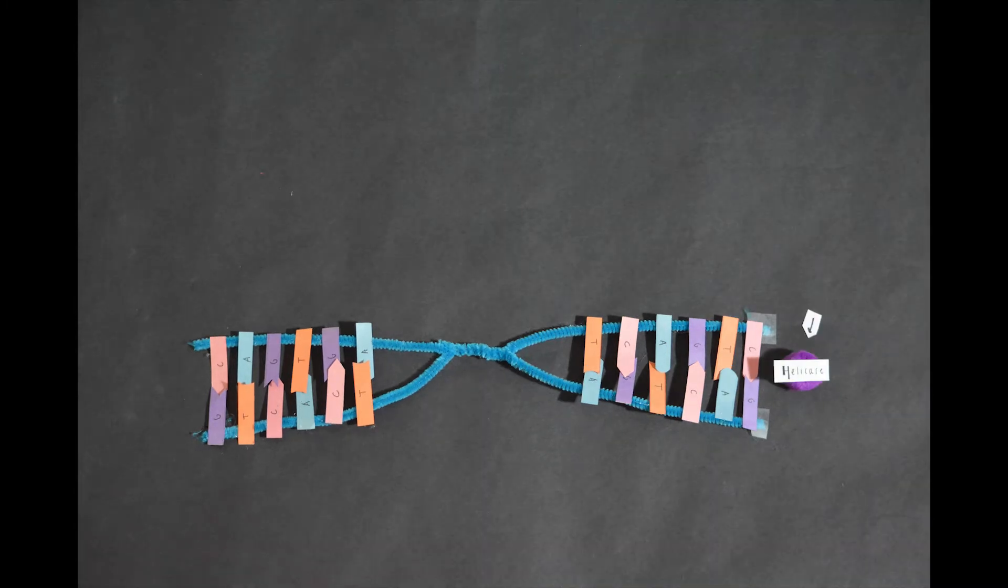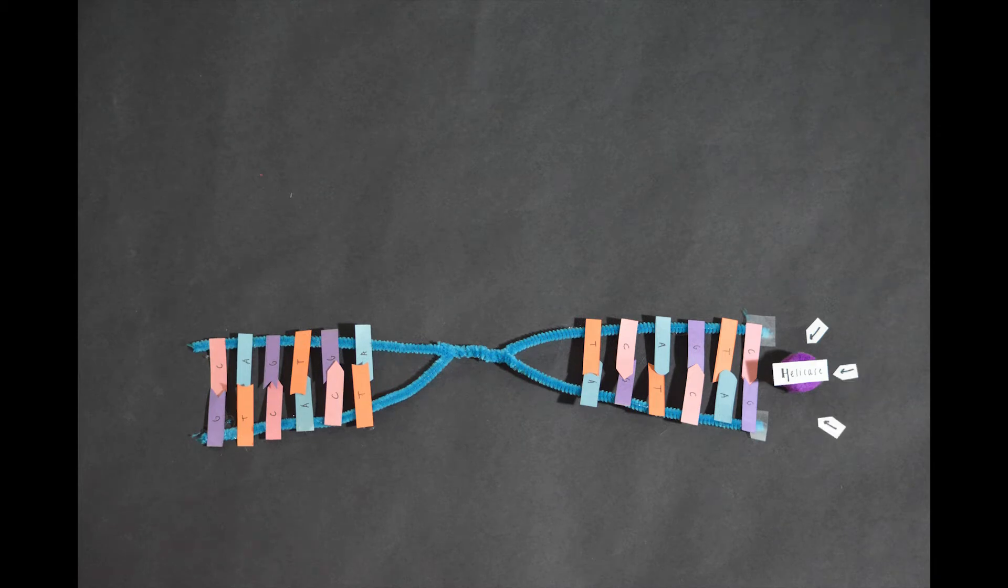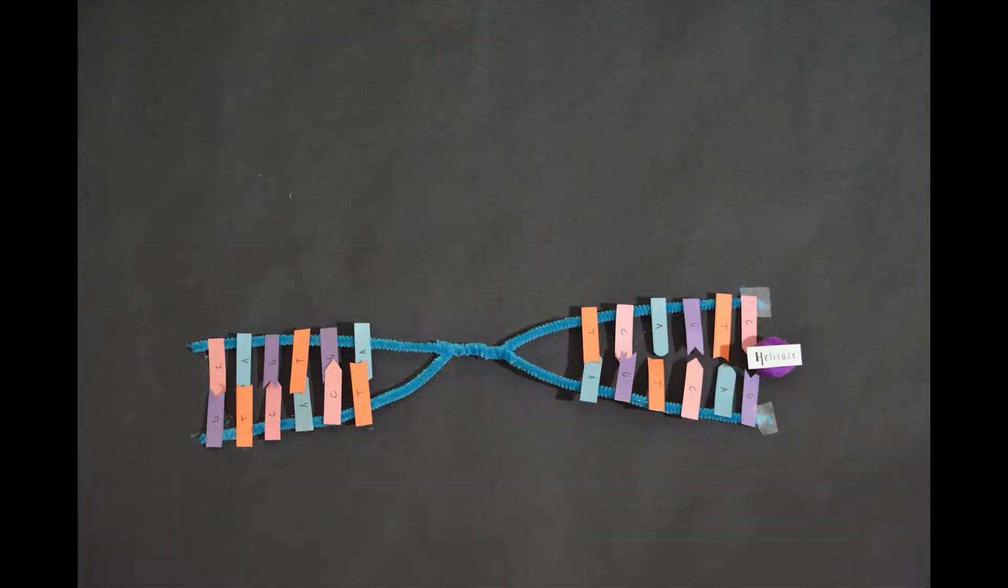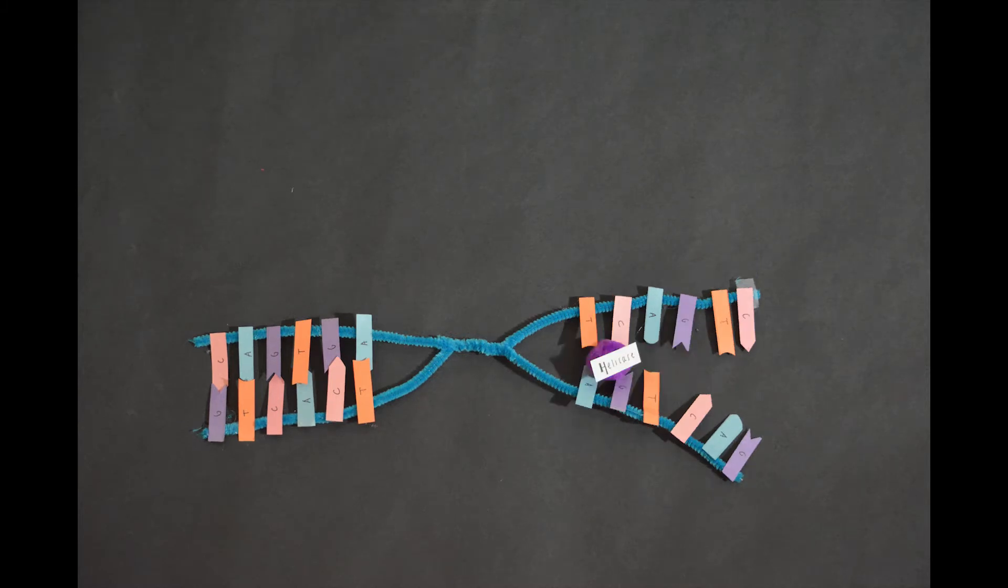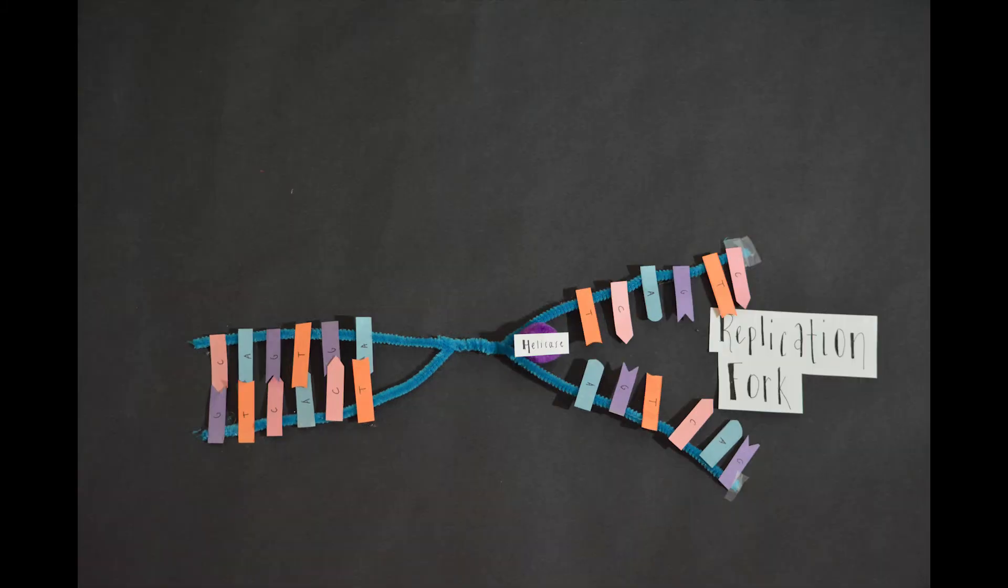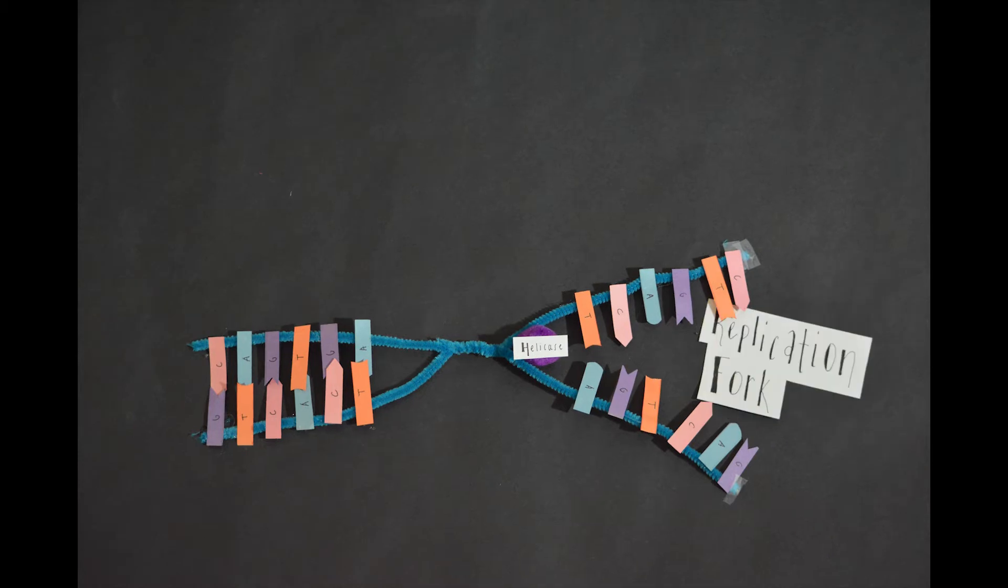DNA replication starts at the origins of replication, which is where the helicase begins its work. The helicase is the enzyme to firstly untwist the DNA strand and then unzip it by disrupting the hydrogen bonds. After the helicase unwinds the helix, it creates a replication fork, which is where the DNA replication takes place.